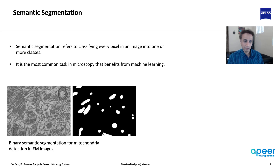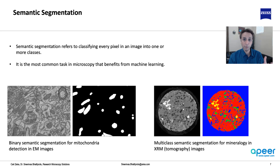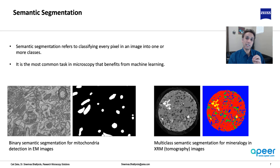Multi-class semantic segmentation is common in material sciences, geosciences, and remote sensing — for example, classifying buildings, roads, and green grass. In this mineralogy example, the dark area is background or pore space, red is mineral one, yellow is mineral two, and green is mineral three. Every pixel is classified, which is very useful for percentage analysis — like determining what percentage of an area is covered by a certain mineral.